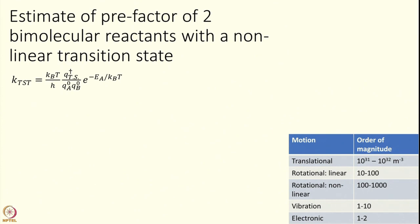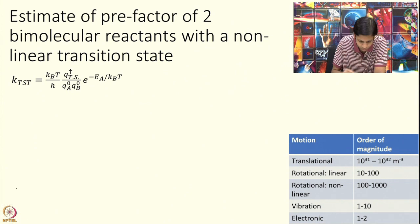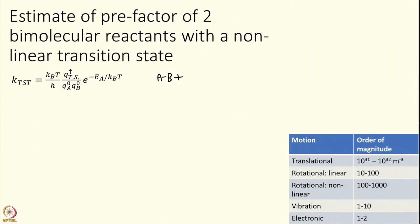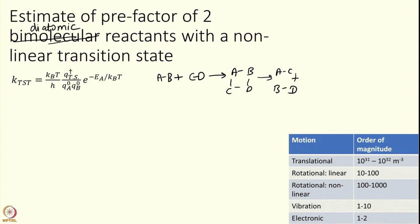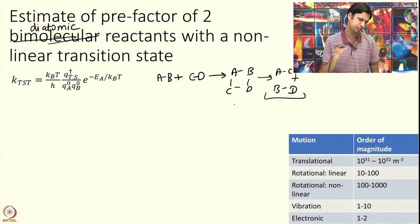Today I will not compute exact numbers but just make estimates; the next module is dedicated to an exact worked example. As a ballpark, imagine two diatomic reactants: AB + CD, where the transition state looks something like a four-center complex going to AC + BD. I want a rough estimate of what the transition state rate constant will be.